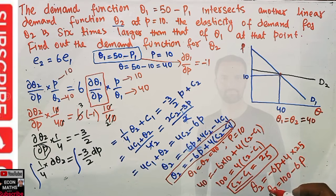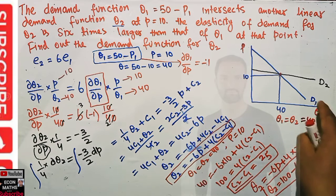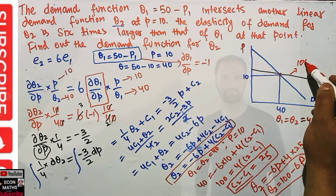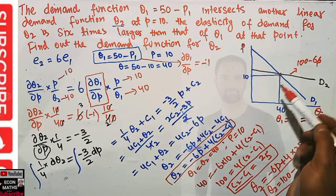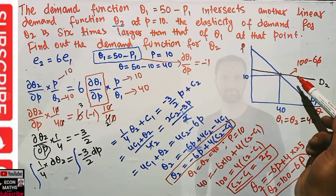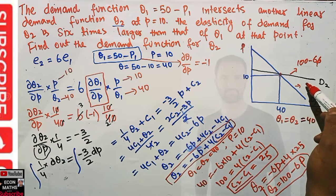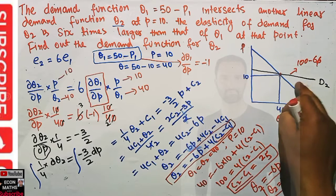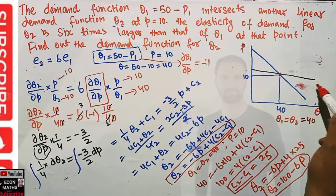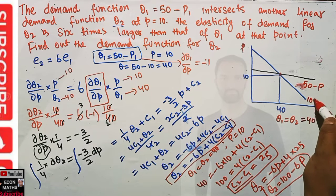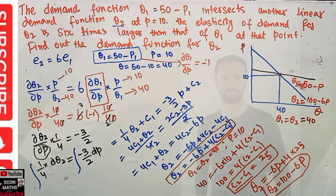Plugging c2 minus c1 equals 25 back into the expression for q2: q2 equals minus 6p plus 4 times 25, which is minus 6p plus 100. Rearranging, our demand function for q2 is q2 = 100 minus 6p. We can also confirm graphically: q1 has a price intercept at 50, while q2 has a price intercept at 100/6, making q2 flatter or steeper than d1.